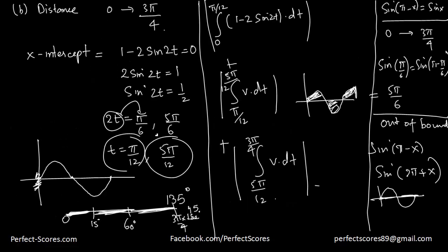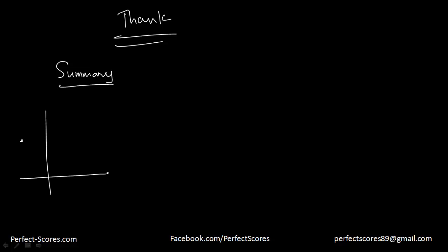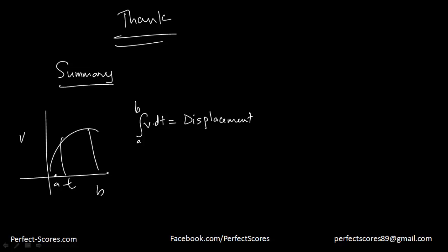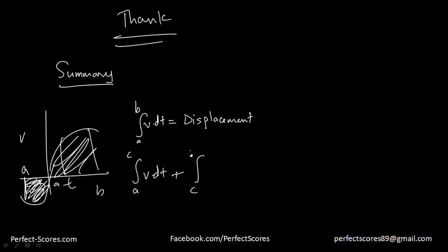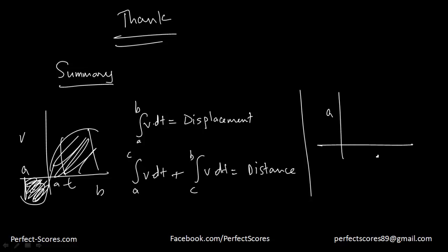So that's the difference between finding displacement and finding distance. To summarize: the integral from A to B of v·dt gives you the displacement. But if the graph dips below the axis, you split the integral at the x-intercepts and add the absolute values to get the total distance. Similarly, the integral from A to B of acceleration·dt gives you the velocity.